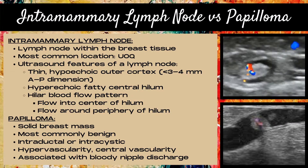Intramammary lymph nodes are lymph nodes found within the breast tissue. The most common location for them is in the upper outer quadrant of the breast, and they have the same features as axillary lymph nodes.